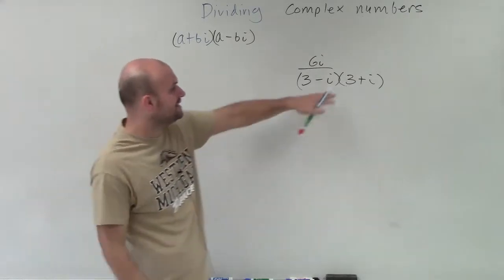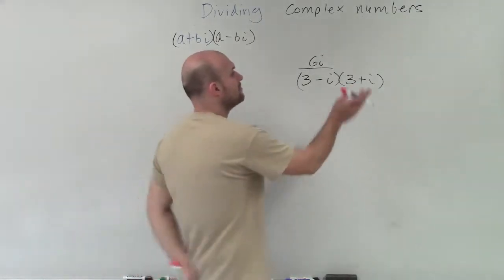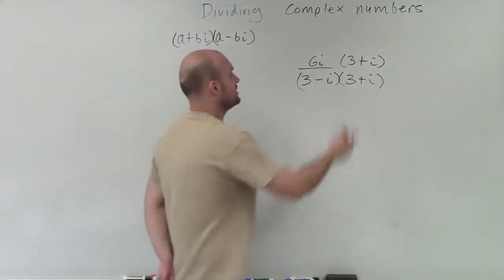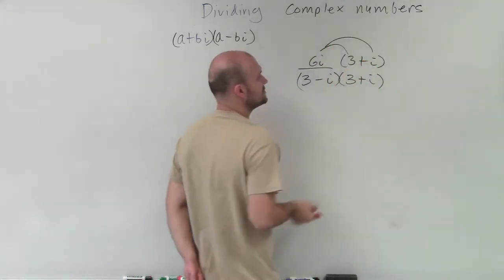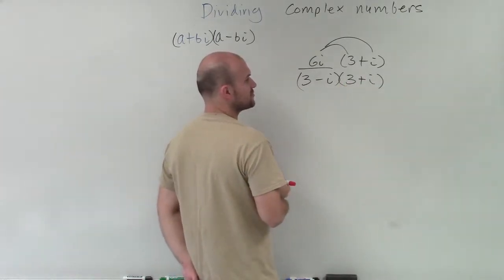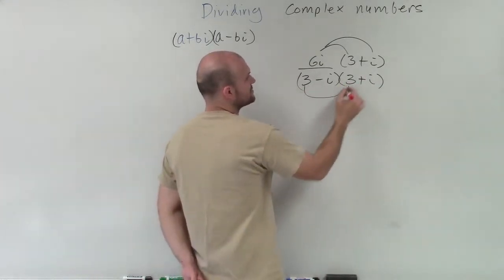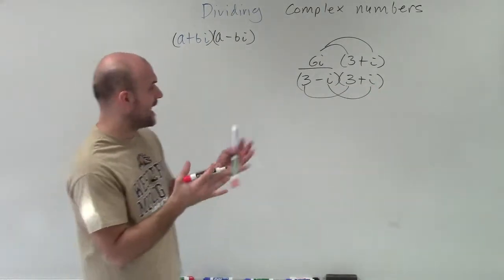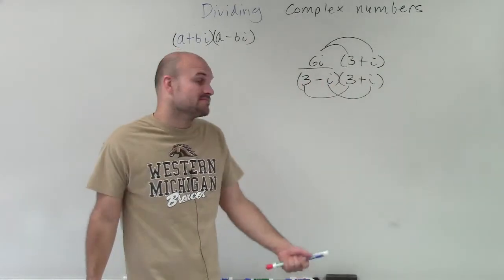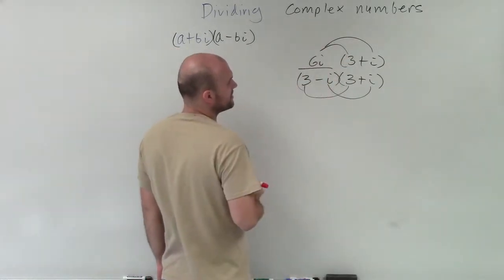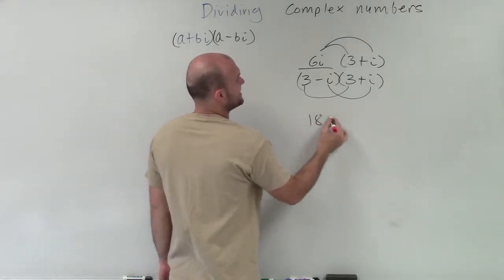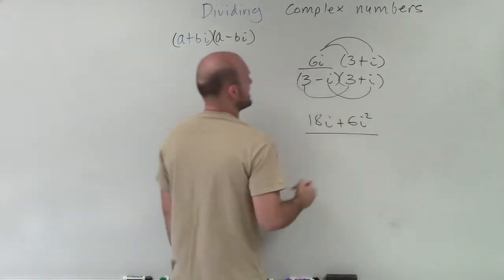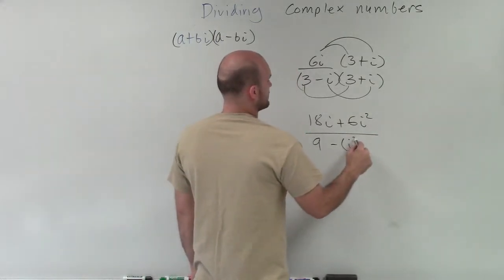And that's going to be exactly what I'll need to eliminate my i. But remember, whatever I do in the denominator, I have to make sure I do in my numerator. So in my numerator, you can see that now I have distributive property. And here, I'll just use the difference of two squares. By applying distributive property up top, I have 18i plus 6i squared. And then in my denominator, I have 9 minus i squared.